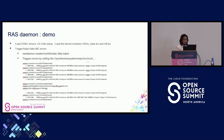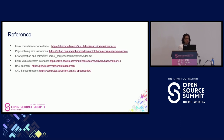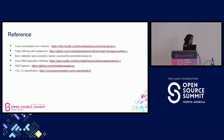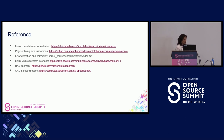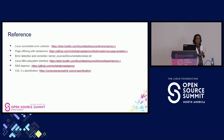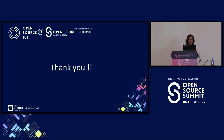That concludes this presentation covering the RAS functionality components in the kernel and at the user space level, taking RAS daemon as an example tool for handling RAS functionality. These are the references used from the kernel sources and the application repository. The CXL memory device was used as an example given the speaker's work on CXL memory components.